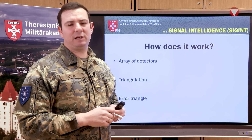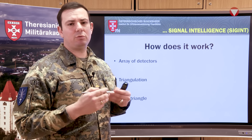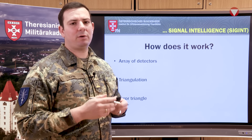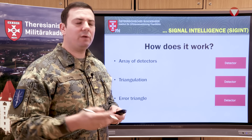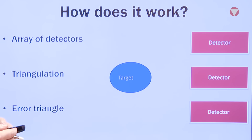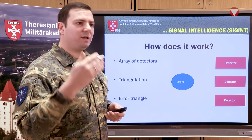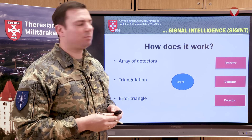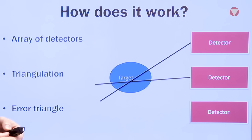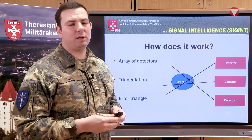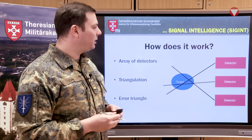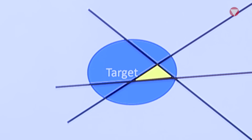What does this mean for signal intelligence? If you would like to intercept signals, you need an array of detectors and a target. By knowing the exact frequency of the target, you could triangulate a certain position where the target might be. This is called an error triangle — within this triangle, it is certain that the target will be located.